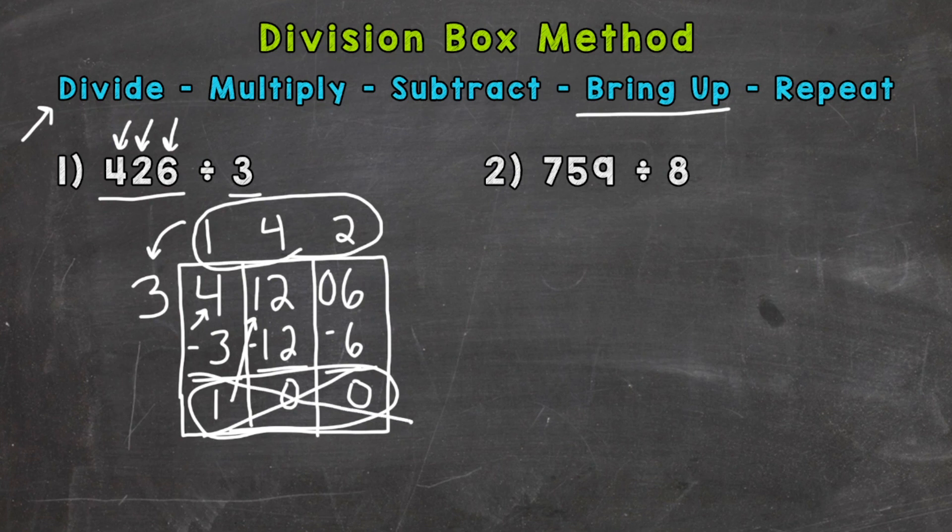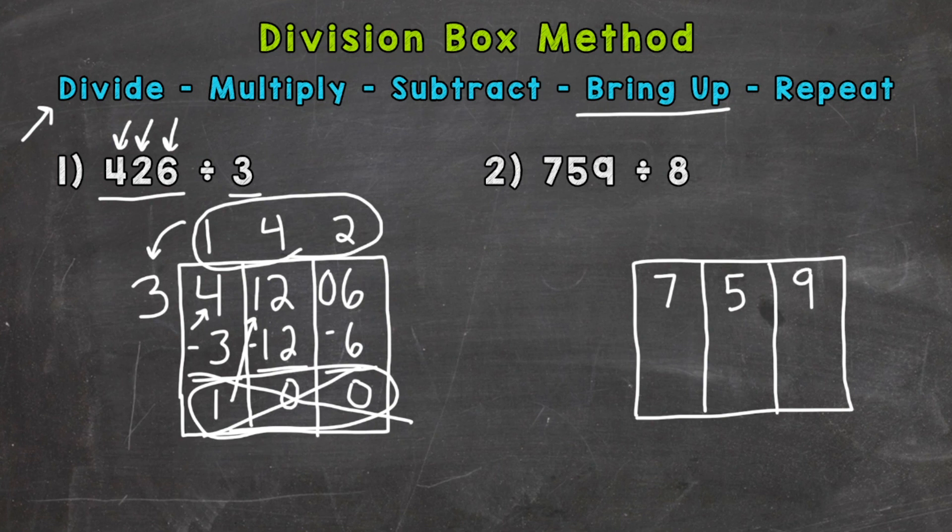So on to number 2 here which this one is going to have a remainder. So let's draw our box or rectangle to start off here. And we have three digit dividend. So we need three sections here. 759. And our divisor of 8.